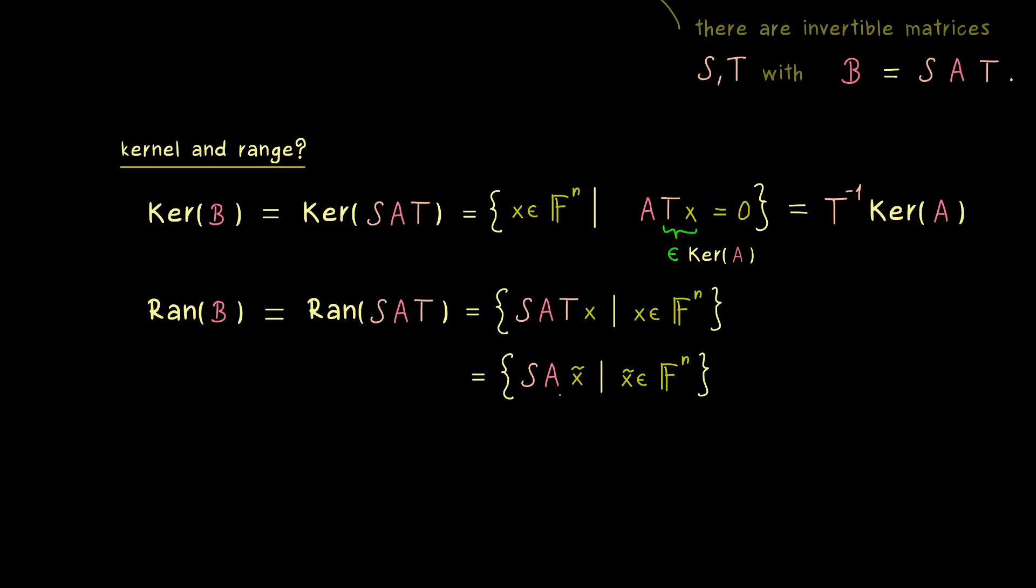And moreover we also see that A times x tilde will give us the whole range of A. In other words, here we also get a nice formula for the range of B, we get that it is S times the range of A. So there we have it, this is how the range transforms under the equivalence relation. This means, it's definitely possible that the range also changes.